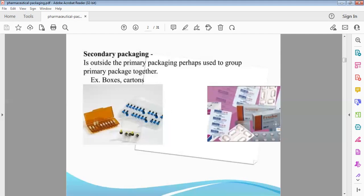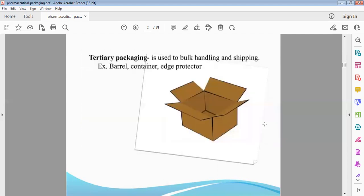For example, this is a small box, there is a sheet in that sheet, there are tablets. Tertiary packaging, this is bulk packaging. Secondary packaging is used in a carton box for very easy handling, shipping, barrels, containers. Cotton boxes and tertiary packaging.